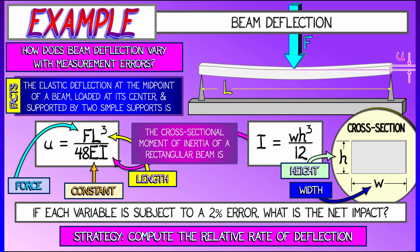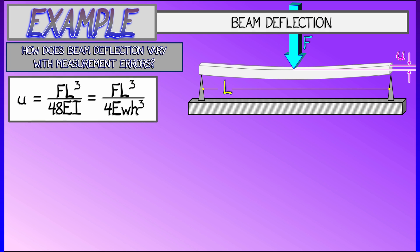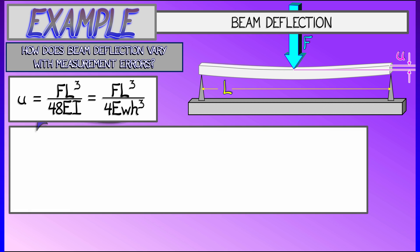We were fiddling around with this in a previous example. Now we're going to do it for real using relative rates of change. So let's take that formula for u and substitute in what we have for i. And now we get a function u equals fl cubed over 4 times e times w h cubed. We're going to consider e a constant, everything else a variable.